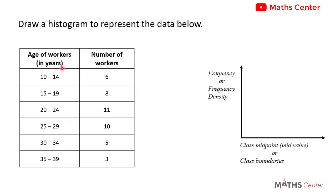Whether you have frequencies or frequency densities on the vertical axis depends on the class size or class width. If the class size is the same for all classes, then you use the frequencies. So you first have to determine whether the class size is the same for all classes. A quick way of doing that is by finding the difference between the upper class limit and the lower class limit. The first class is 10 to 14, so the difference is 14 minus 10, which is 4. The second one: 19 minus 15, that is 4.